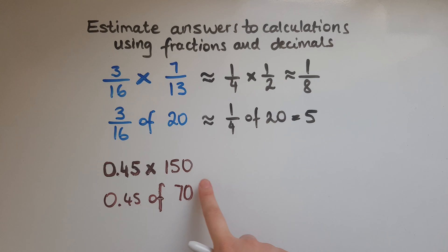And with decimals, we've got 0.45 times 150. Now, I know that that is very close to half, which is 0.5. So I'm going to use that rounded figure to multiply by 150. So half of 150, which is 75. So this is about 75.